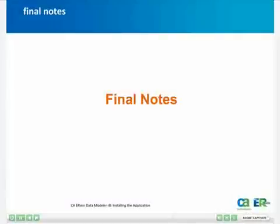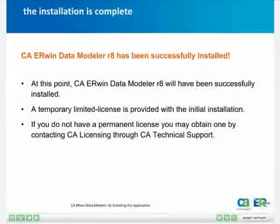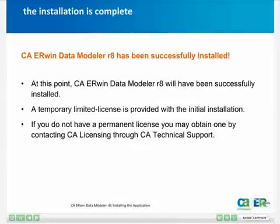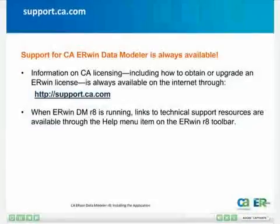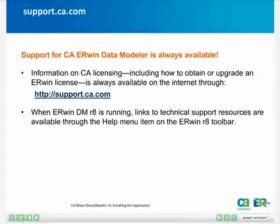The installation is complete, but there are a couple of items to go over before we conclude. The Irwin R8 installation includes a limited, temporary license for Irwin Data Modeler, which will allow you to use it immediately after installation, although in a temporary, limited fashion. If you already have a license for R8, you can use it now to unlock the full potential of your application. If you've not yet obtained your permanent license, you can do so by contacting CA Licensing Support through the CA Support website at support.ca.com. Through this site, you can find support and licensing information for CA Irwin Data Modeler.